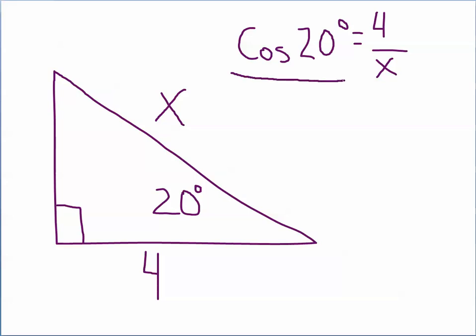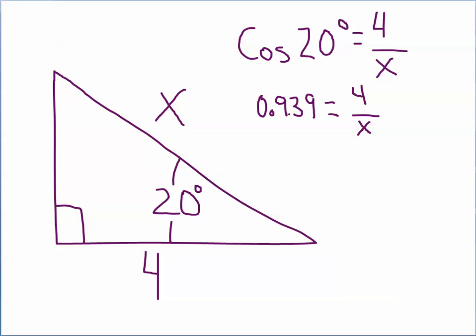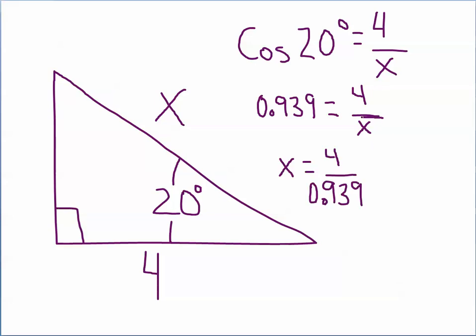The cosine of 20 degrees, we know, is equal to 4 divided by x. The cosine of 20 degrees is just a number that's stored in your calculator, or you could look it up on a chart. So we find out that the cosine of 20 degrees is, correct to three decimal places, 0.939. You can find that by pushing cosine 20 degrees on your calculator. We now know that equals 4 divided by x, the adjacent side divided by the hypotenuse. Now it just becomes an algebra problem, and we solve for x.